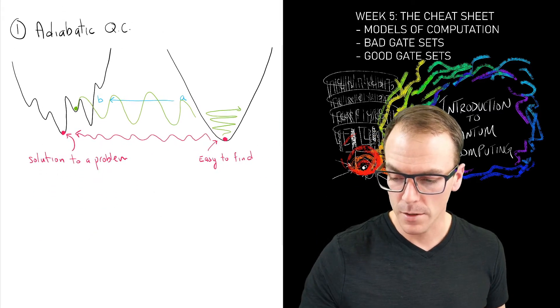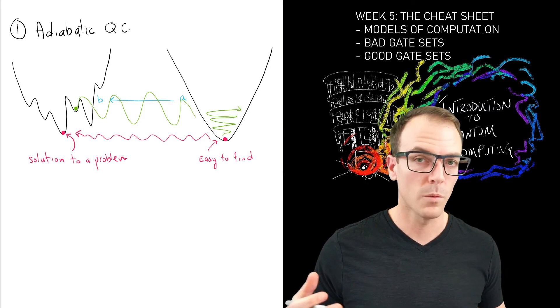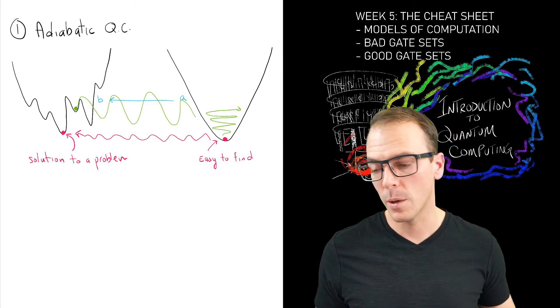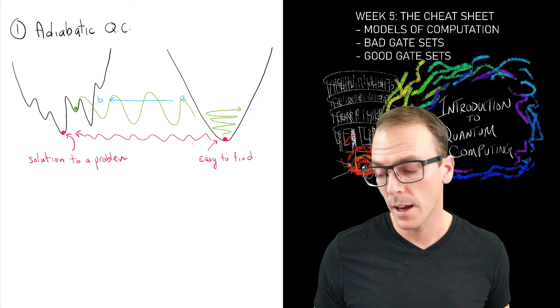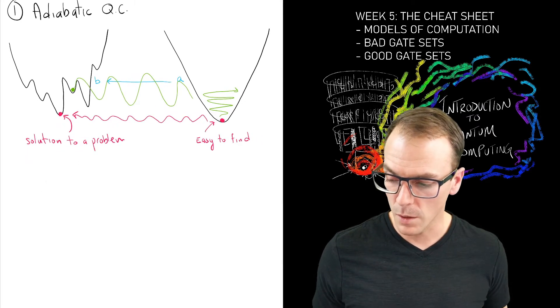So there's a theorem that shows I can transfer problems phrased in one model of quantum computation to problems phrased in another, such as this model, and I can still solve them efficiently. So this is one.